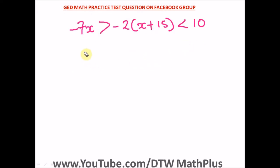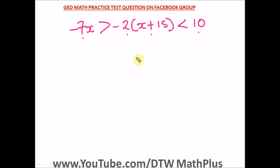So to solve this particular compound inequality, the first thing you have to do is pick the first pair and the last pair, solve them separately, then combine your answers. Just watch and see what happens.